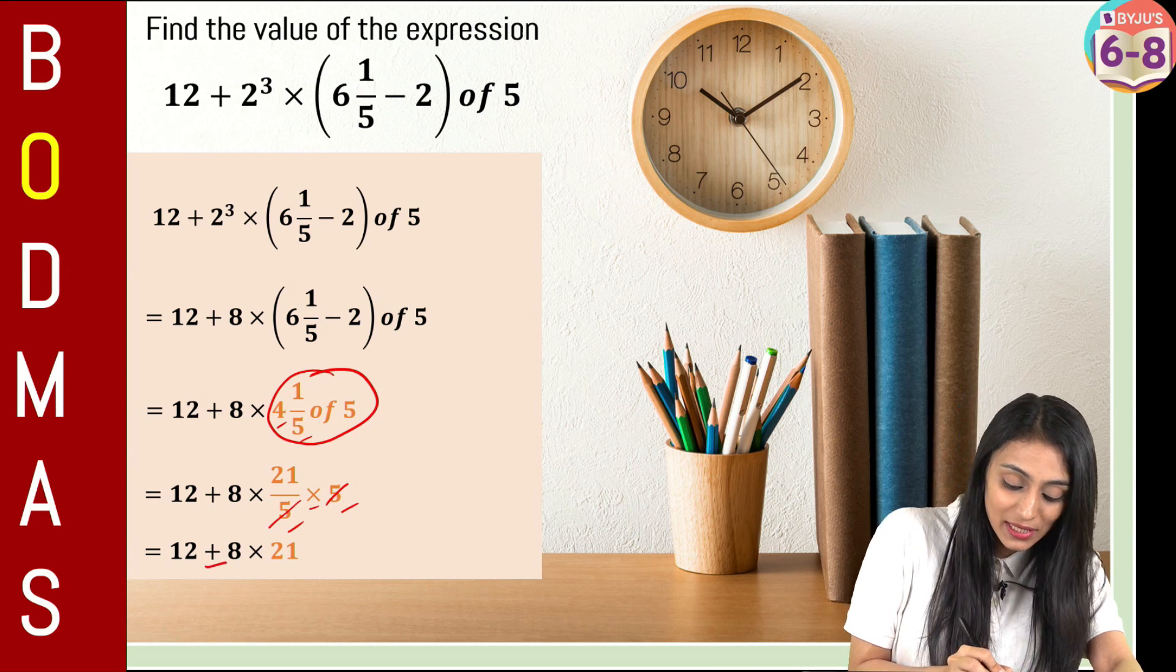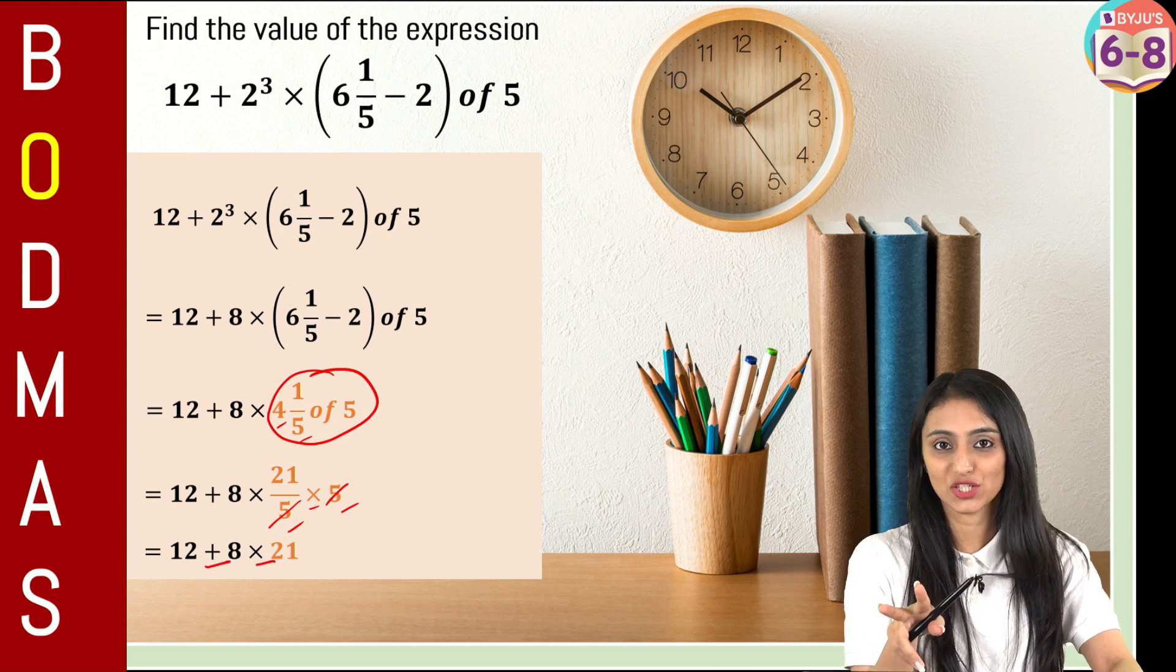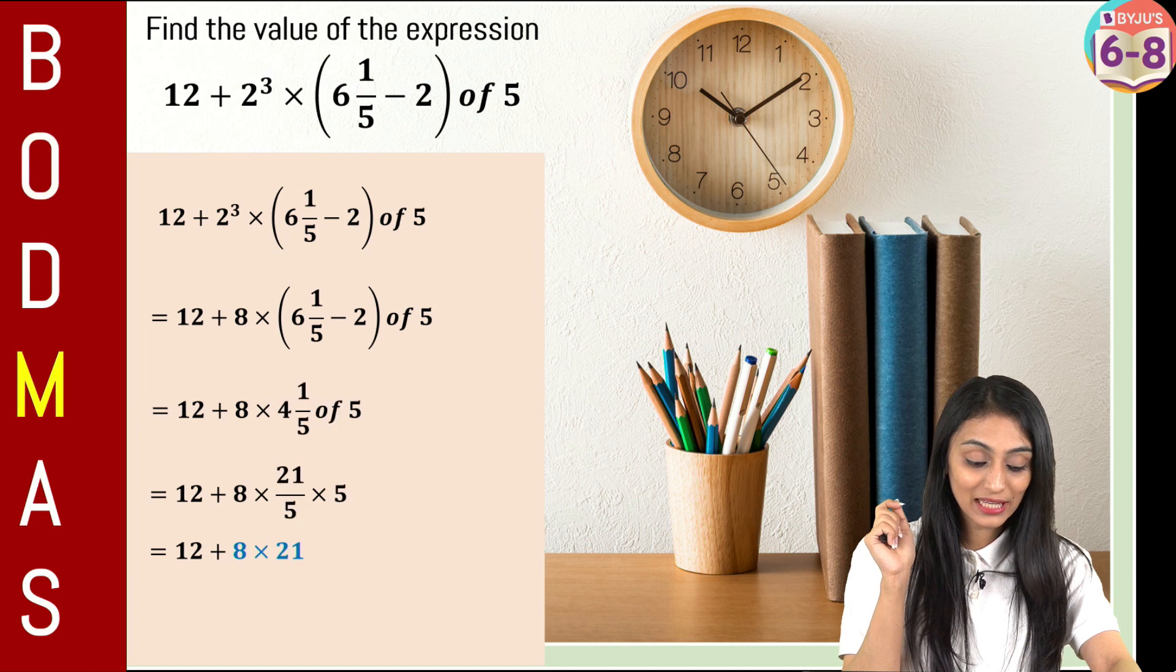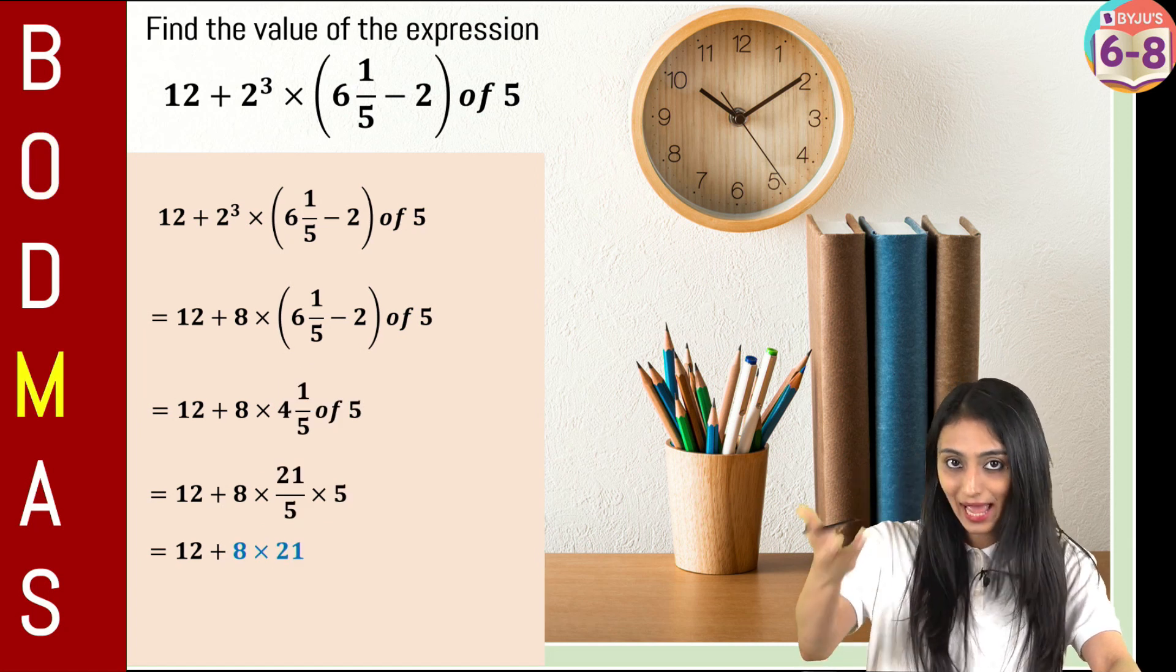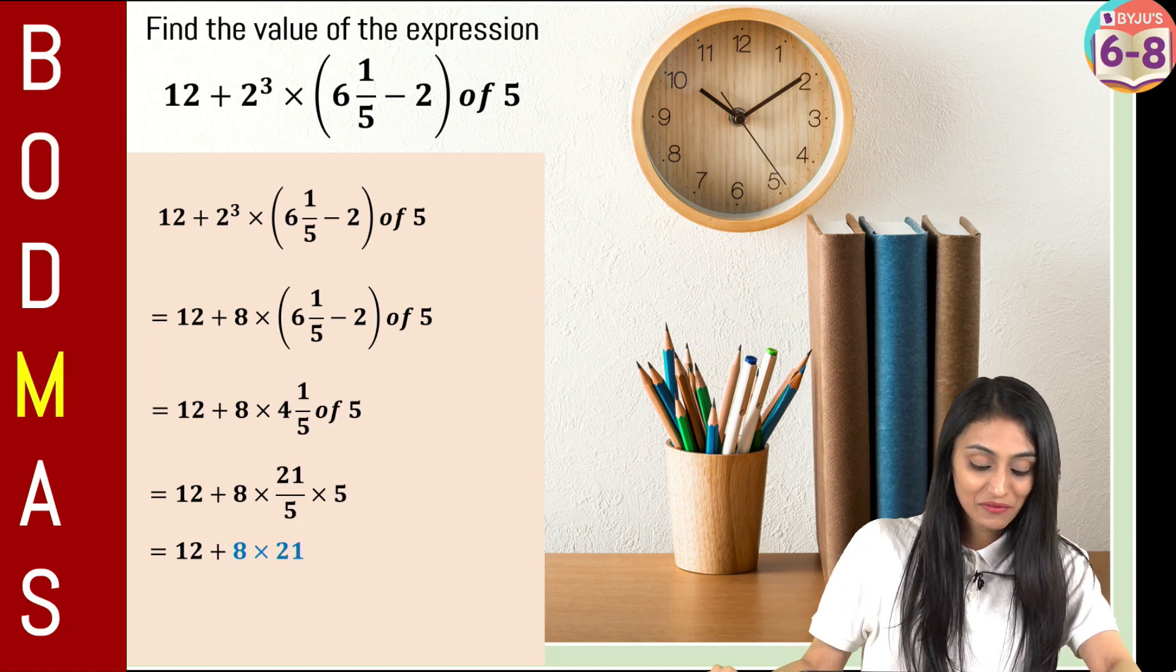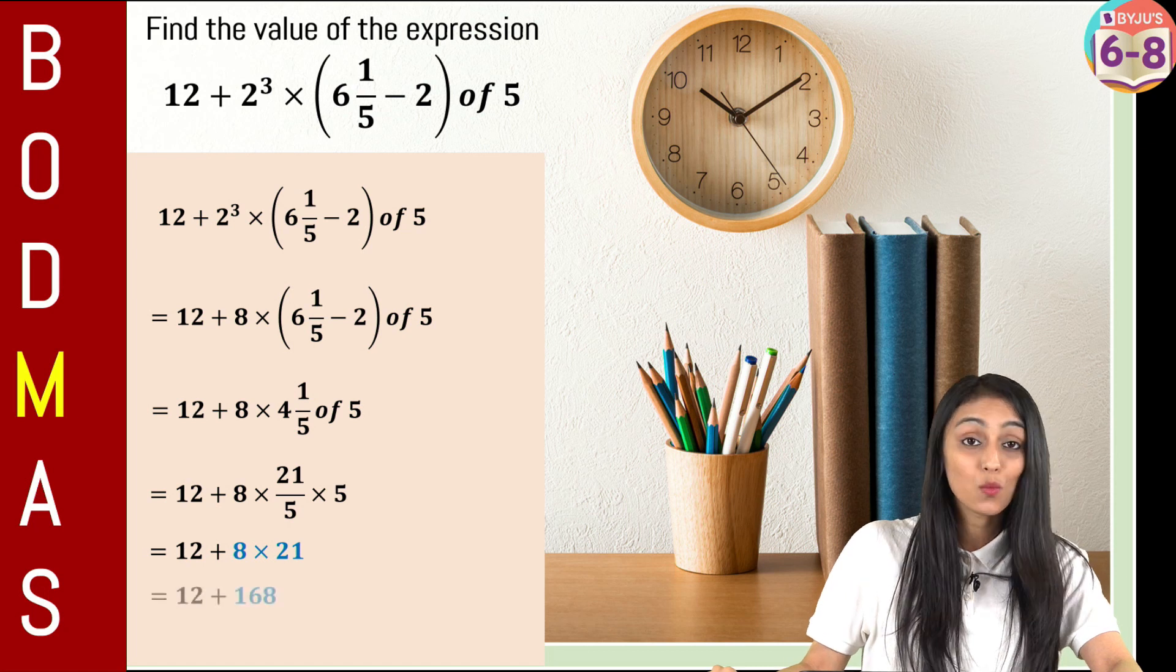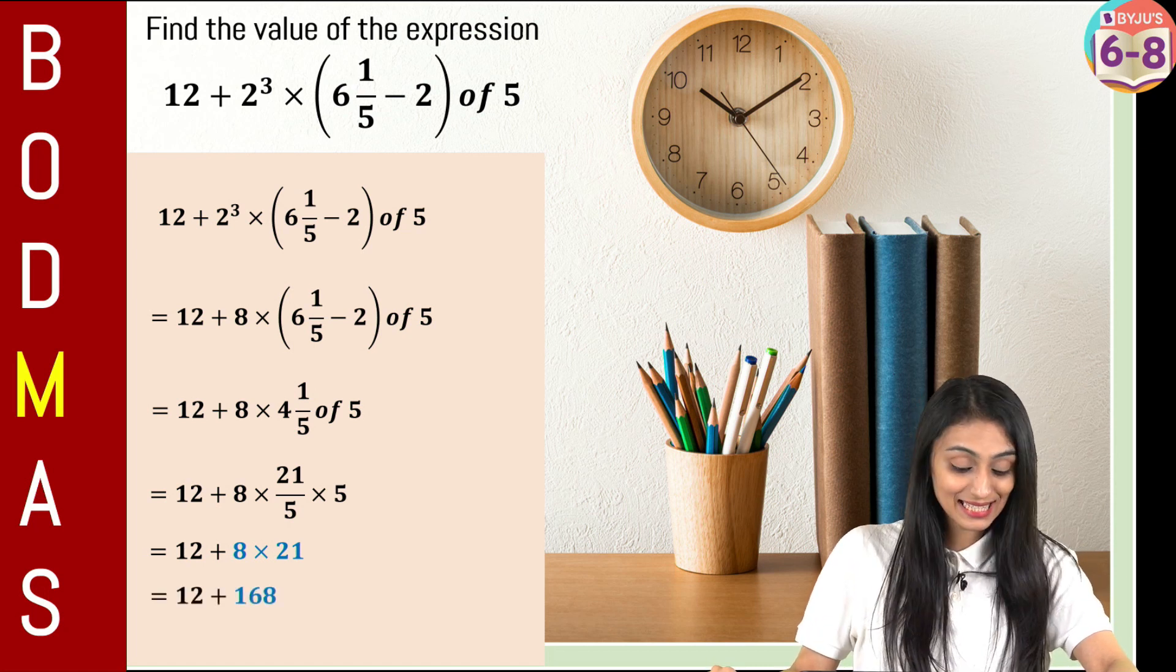So we have this addition and multiplication over here. These two operations we can see. Now we will be applying multiplication first because M comes first. So we have 8 times 21, that's going to be 168.